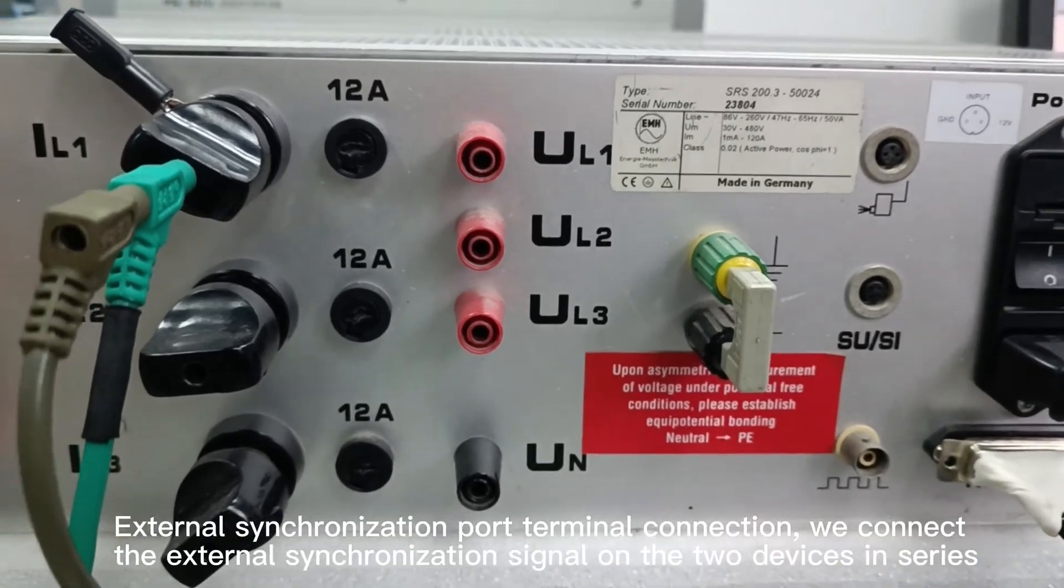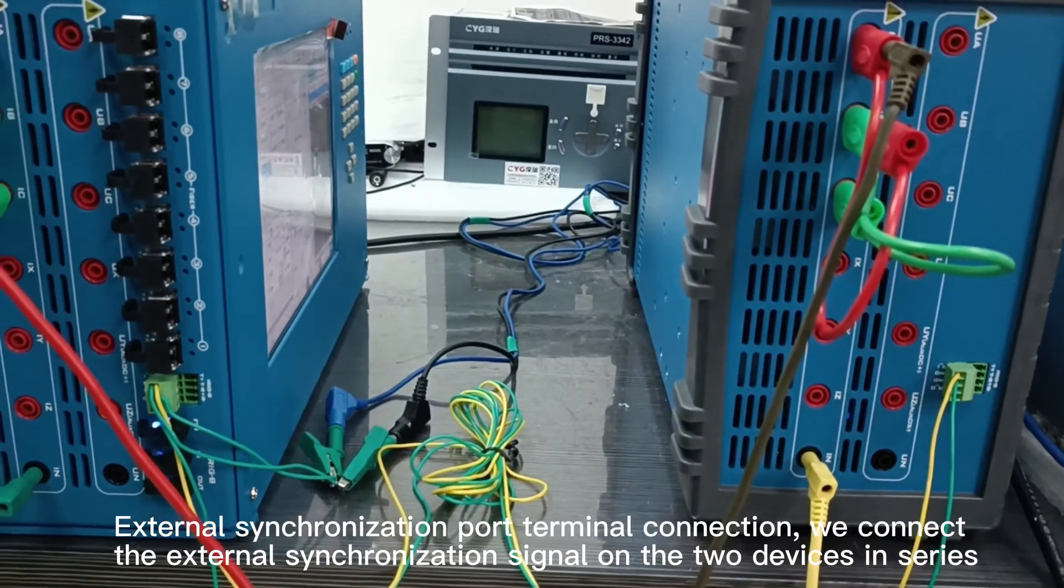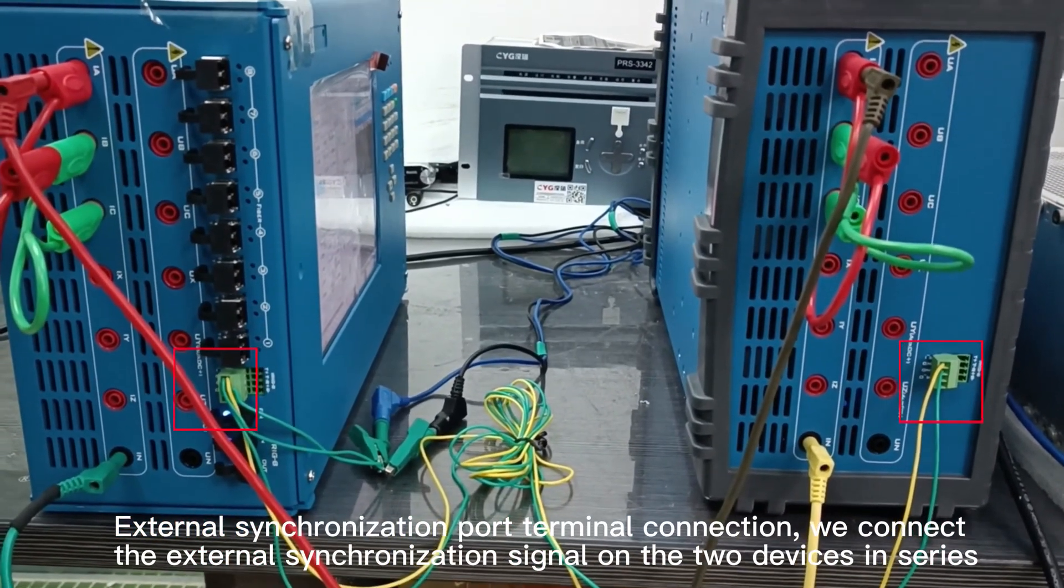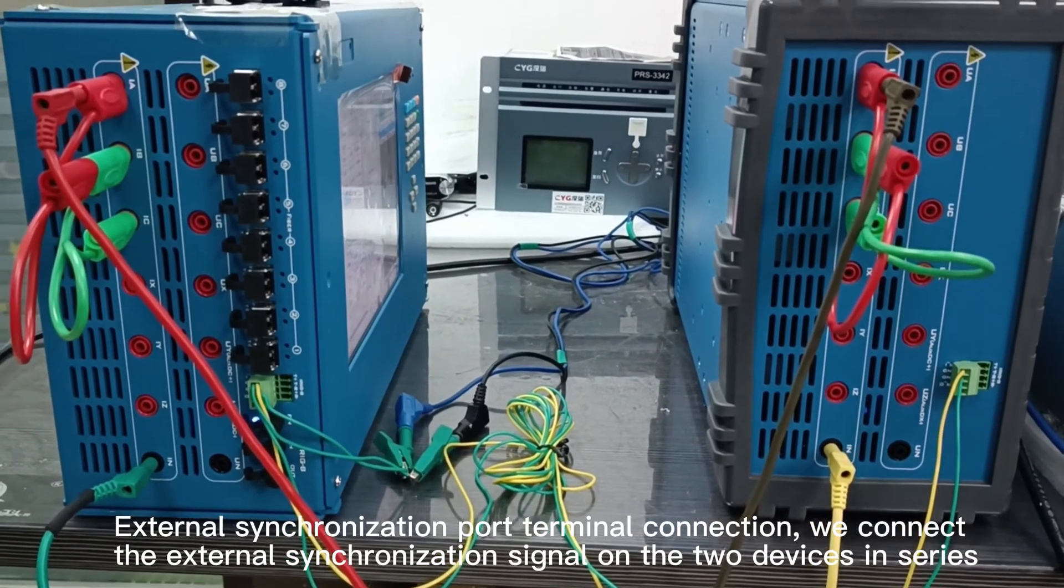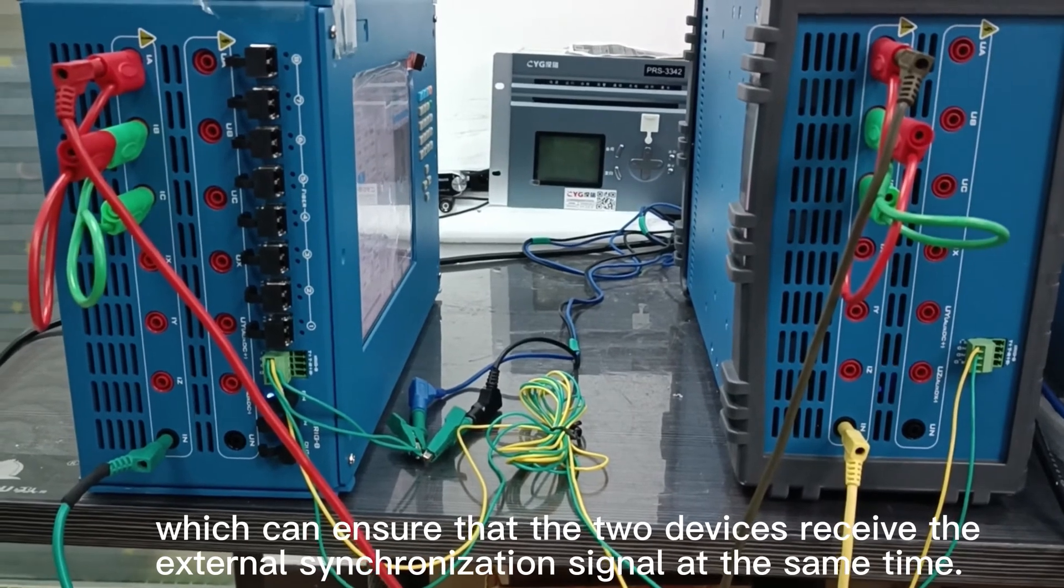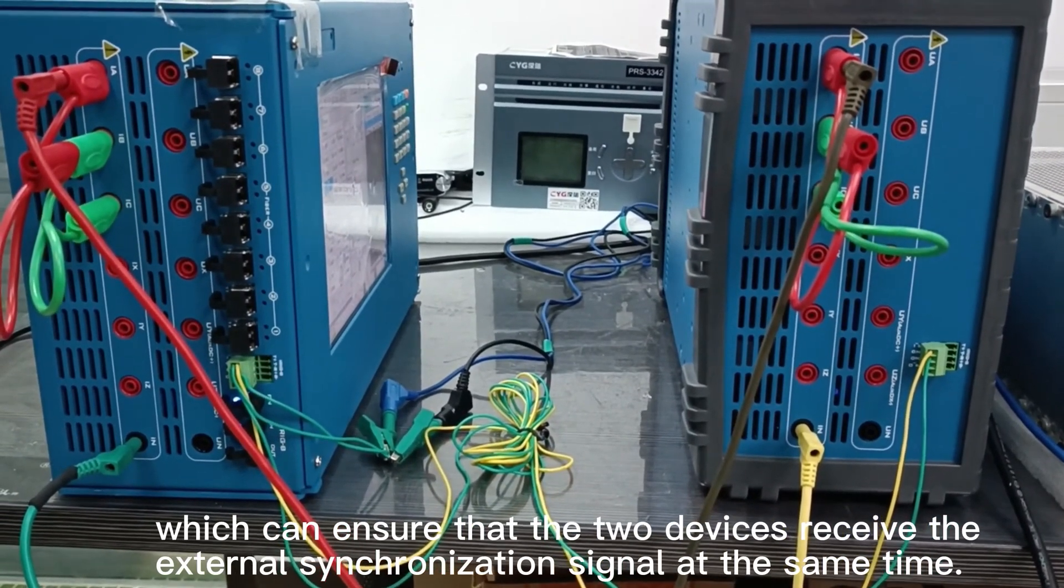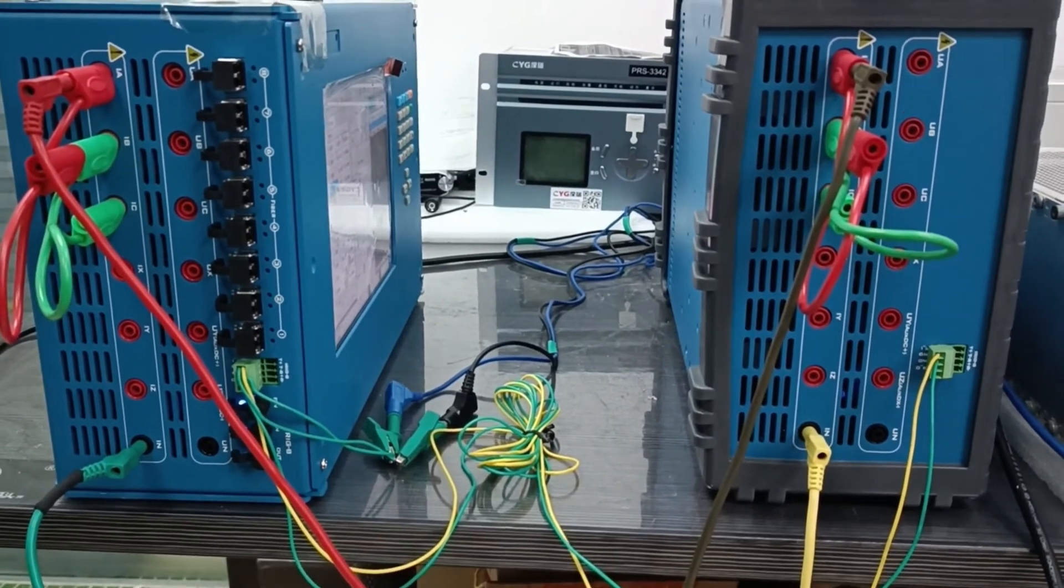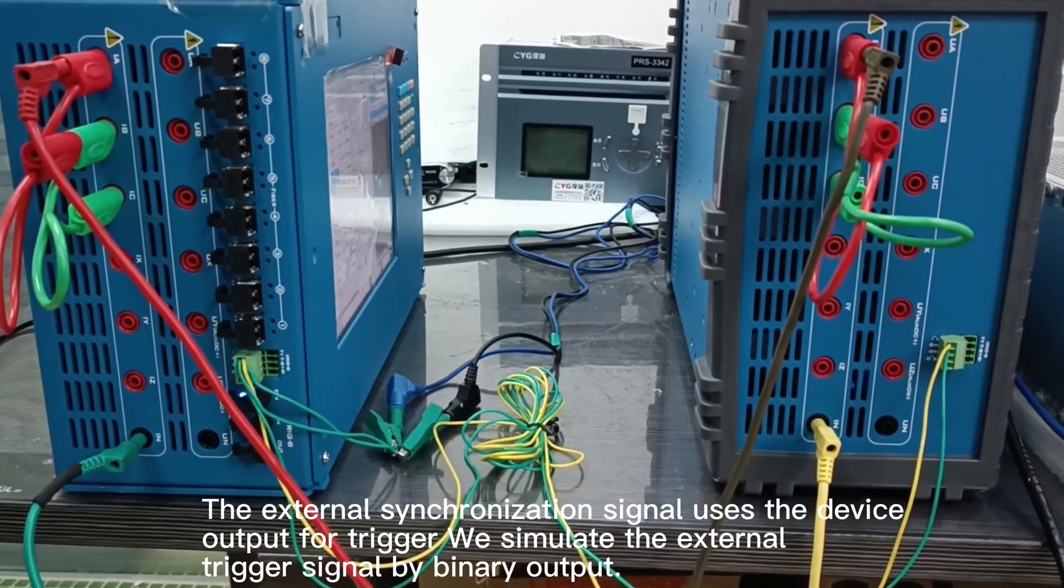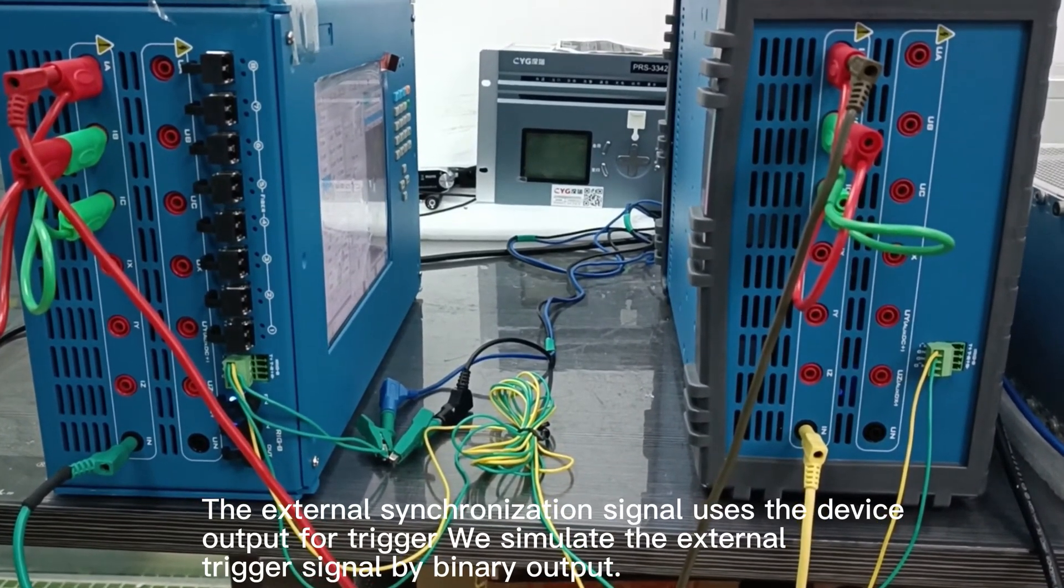Part two: external synchronization port terminal connections. We connect external synchronization signals on the two relay tester devices in series, which ensures that both devices receive external synchronization signals at the same time. The external synchronization signals use the device output for trigger. We simulate the external trigger signal by binary output.